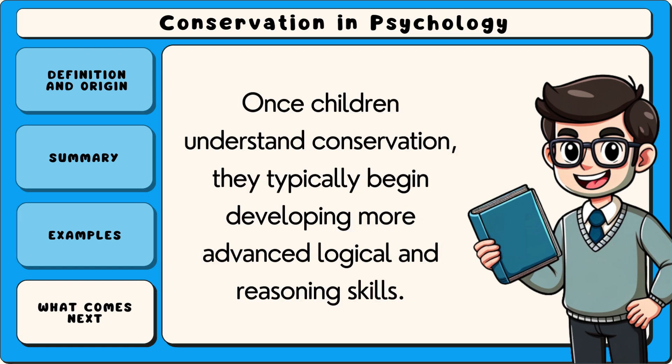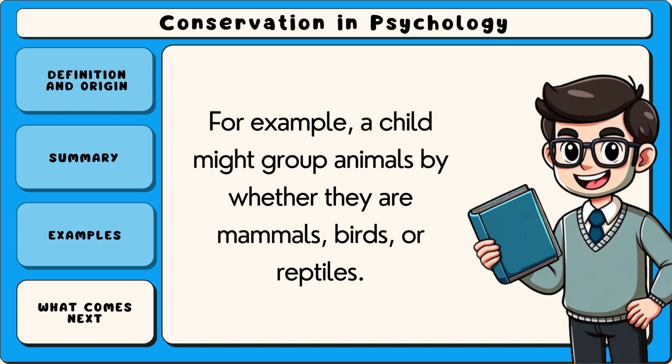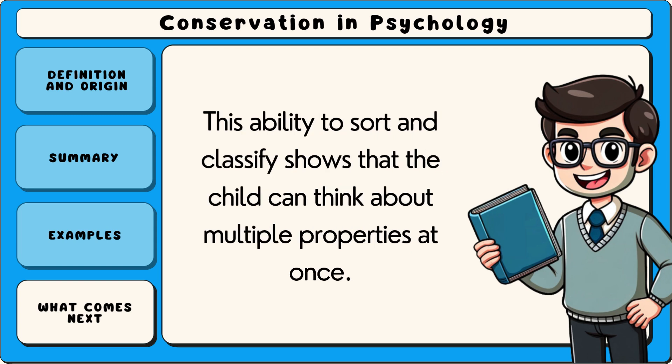Once children understand conservation, they typically begin developing more advanced logical and reasoning skills. One key area of growth is classification, which involves organising objects into categories based on shared characteristics. For example, a child might group animals by whether they are mammals, birds, or reptiles. This ability to sort and classify shows that the child can think about multiple properties at once.